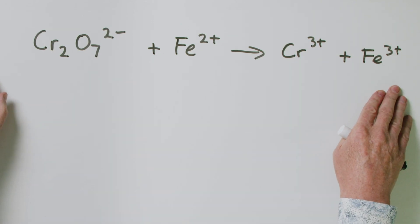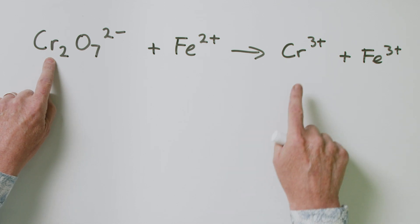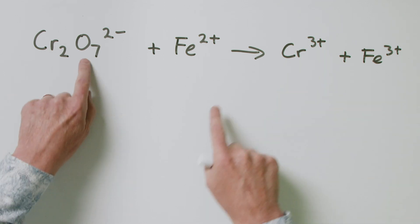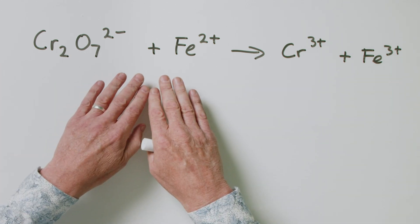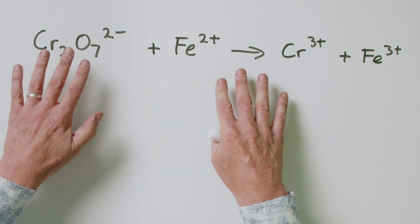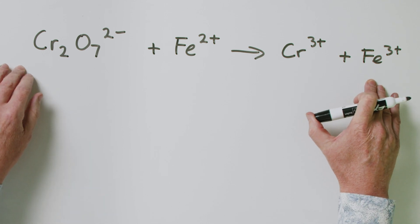It is a fairly involved process but there are rules that you need to follow, and provided you follow the rules we can get through and make sure that this whole thing balances. You can see that this isn't anywhere near balanced — for example, you've got two chromiums here, one chromium here, seven oxygens here, and no oxygens on this side. All this is showing is the bare bones of what the reactants and products are. The very first step is to split this overall redox reaction into two half reactions.